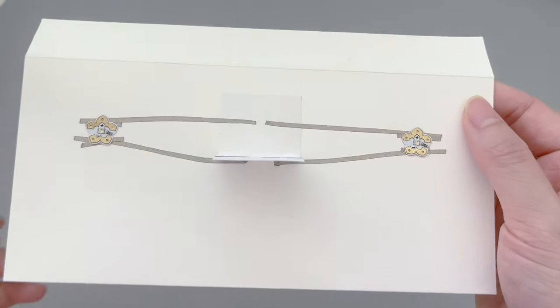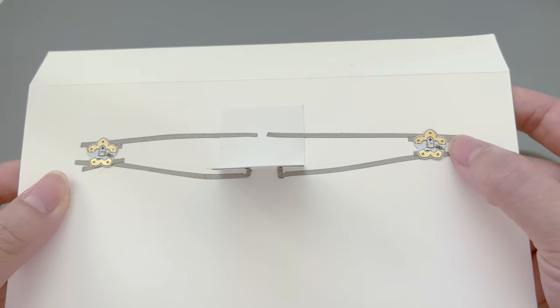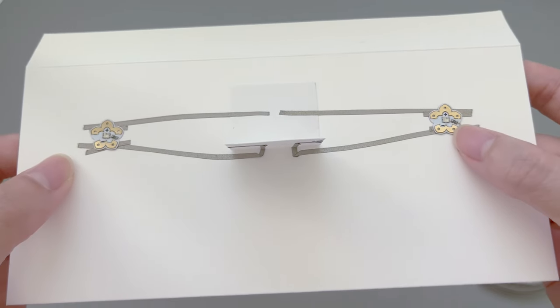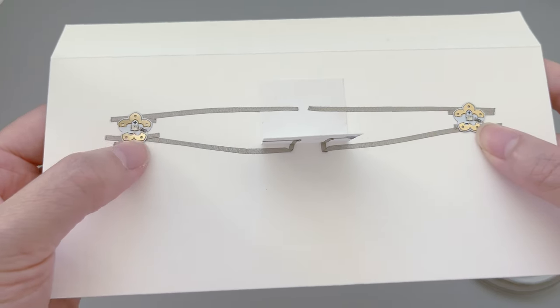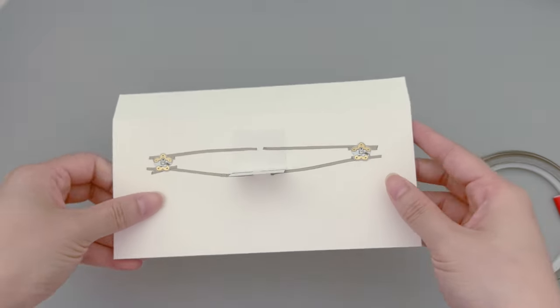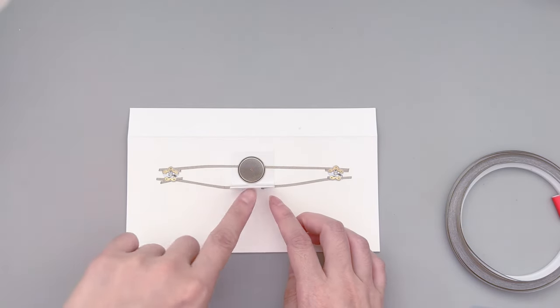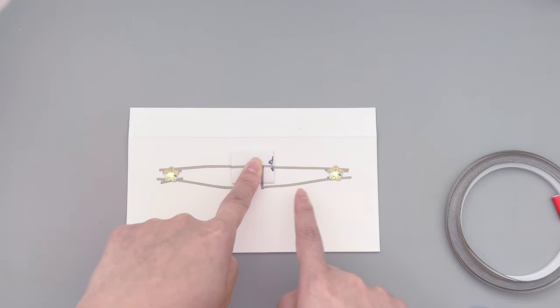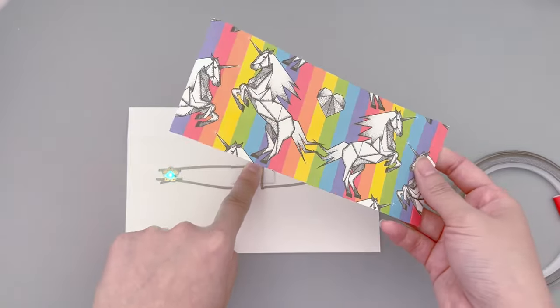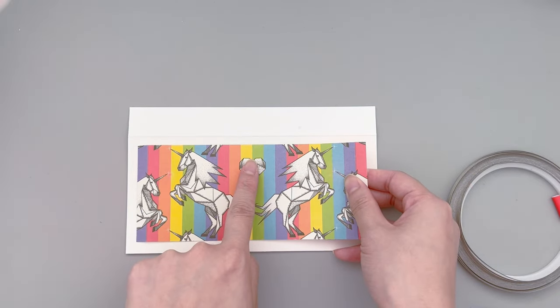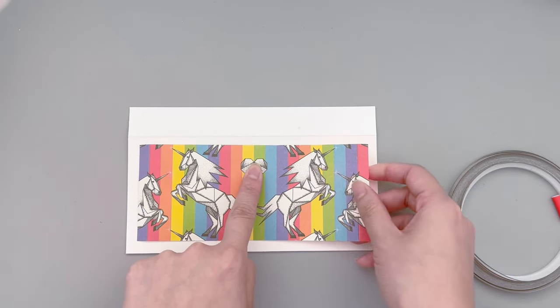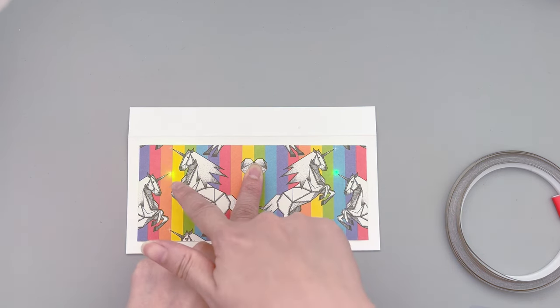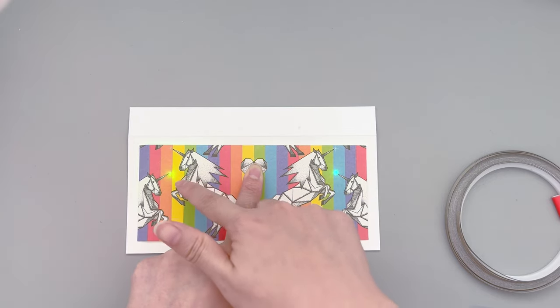Once we are done, we can stick on our LED stickers. I'm using the rainbow face stickers today. Obviously, I have to use those because we're making a Unicorns and Rainbows card and here you can see how it works once we press down on the battery holder to complete the circuit. This is also the time to check if the positions of the LED stickers are where you want them to be. In this case, I'm quite happy with how they are glowing at the top of the unicorn horns.